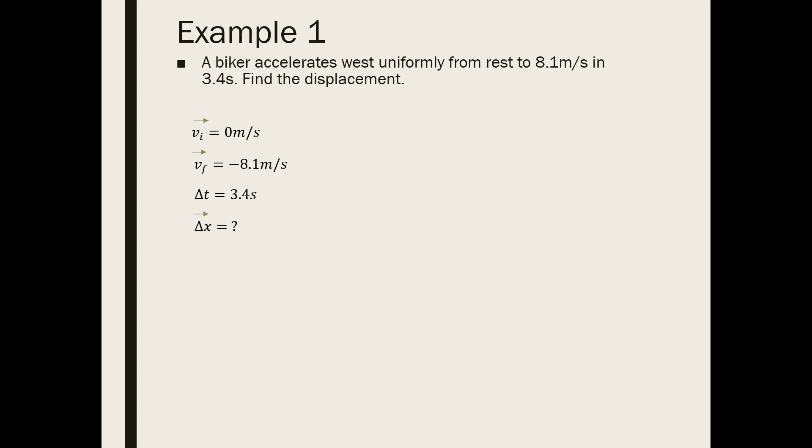We look at the four quantities mentioned in this problem, initial velocity, final velocity, time, and it's looking for displacement. Looking at the four kinematics, it looks like the first has all these variables. Let's go ahead and put these values in. We get delta x equals to one half times zero meters per second minus 8.1 meters per second, or you could also write that as plus negative 8.1 meters per second times 3.4 seconds. After some calculations, we get an answer of negative 13.77 meters or 13.77 meters west.